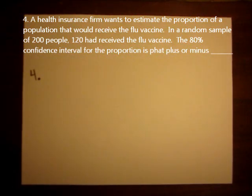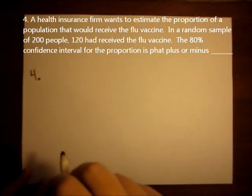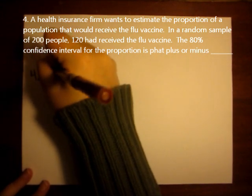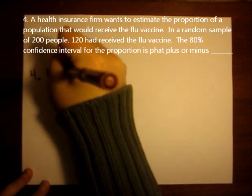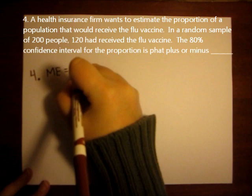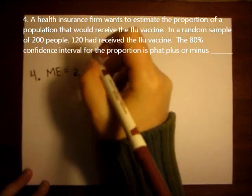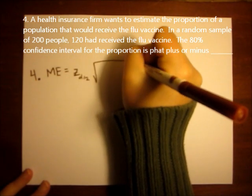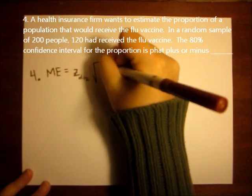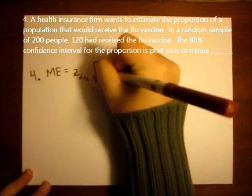Question 4 asks us about a confidence interval for a proportion, and it is already given to us in the form of p hat plus or minus, so what we're looking for is the margin of error. And the margin of error for a proportion is z alpha over 2 times the square root of p hat times 1 minus p hat over n.